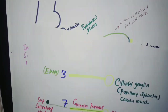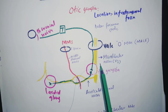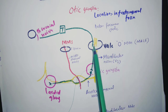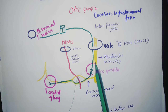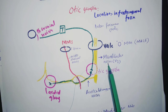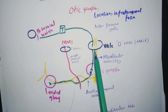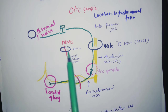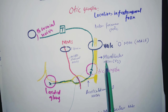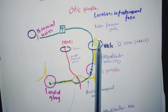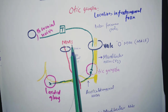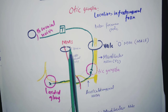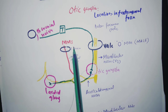The otic ganglia is located in the infratemporal fossa, below foramen ovale. Foramen ovale starts with 'O' and otic ganglia also starts with 'O' — that's the mnemonic. Topographically, the otic ganglia is related to the mandibular nerve; functionally, it is related to the ninth cranial nerve, the glossopharyngeal nerve. The mandibular nerve lies laterally to the otic ganglia. Posteriorly, the otic ganglia is related to the middle meningeal artery, because foramen spinosum lies posterior to foramen ovale — the mnemonic MMS: middle meningeal artery, foramen spinosum.